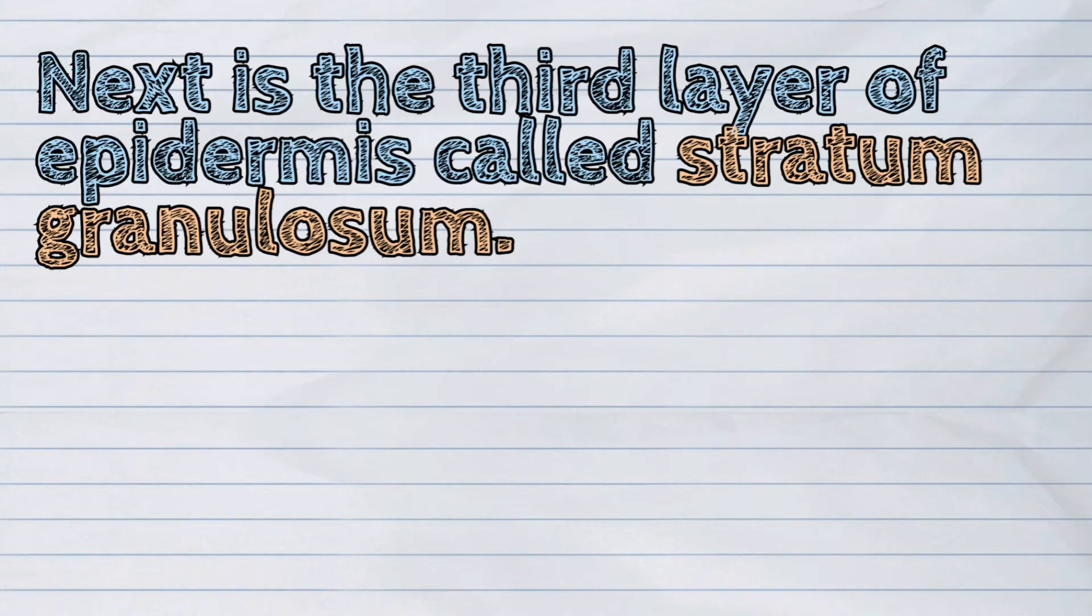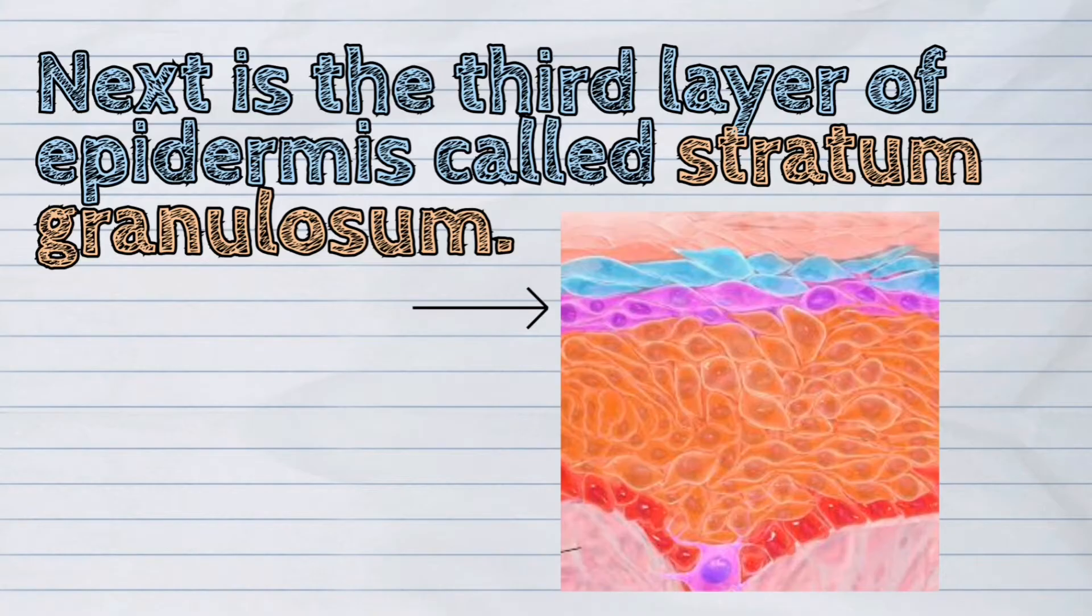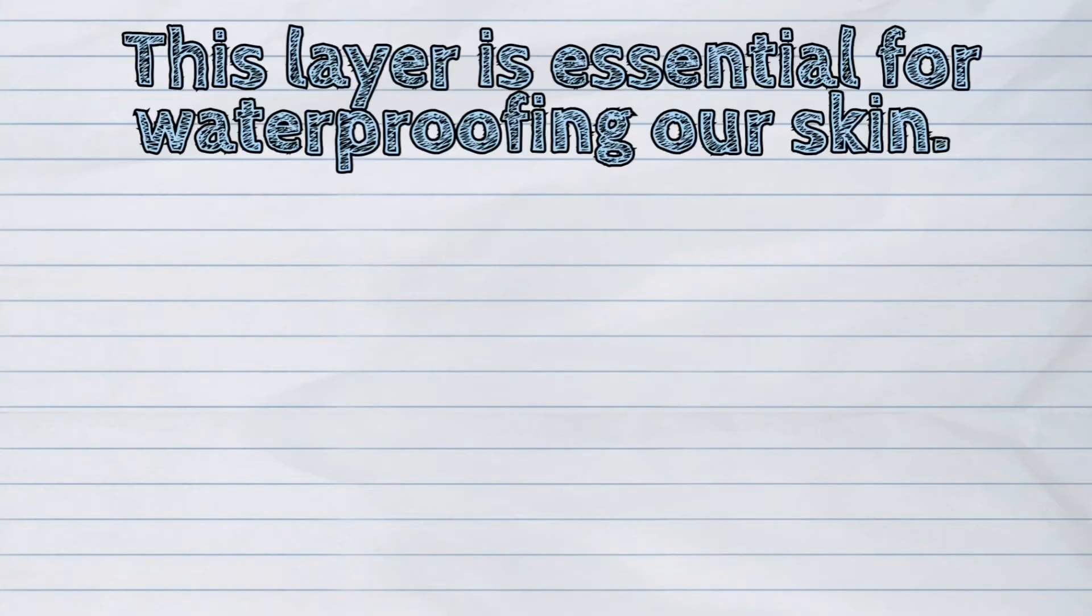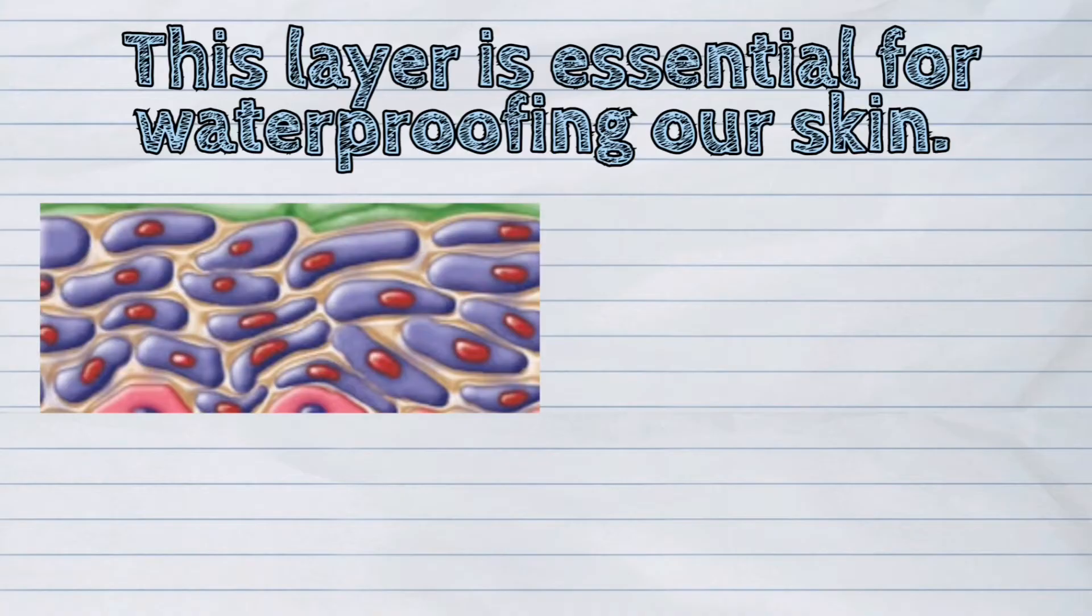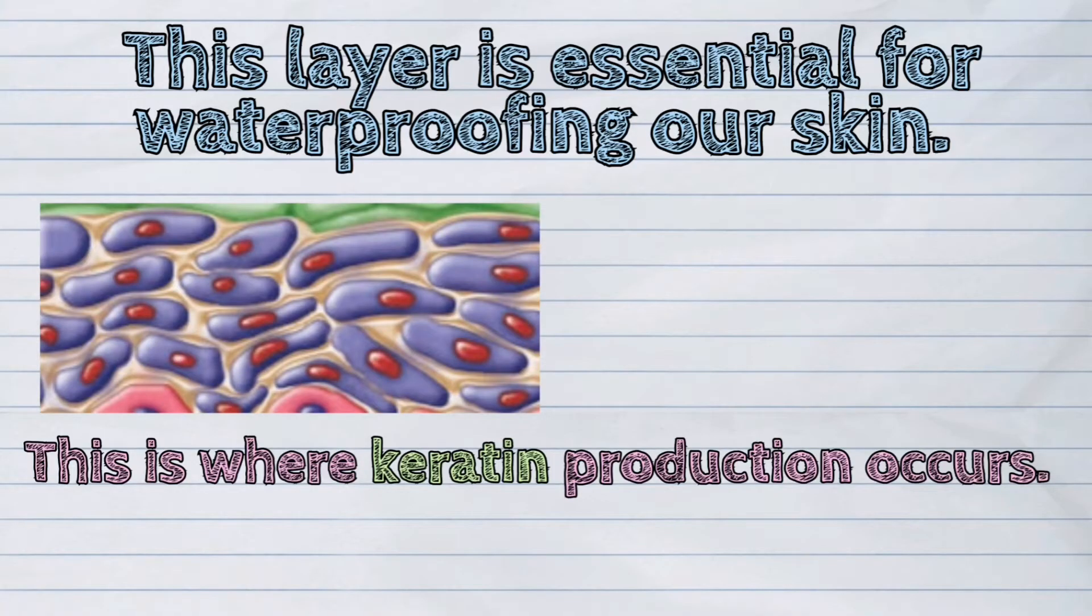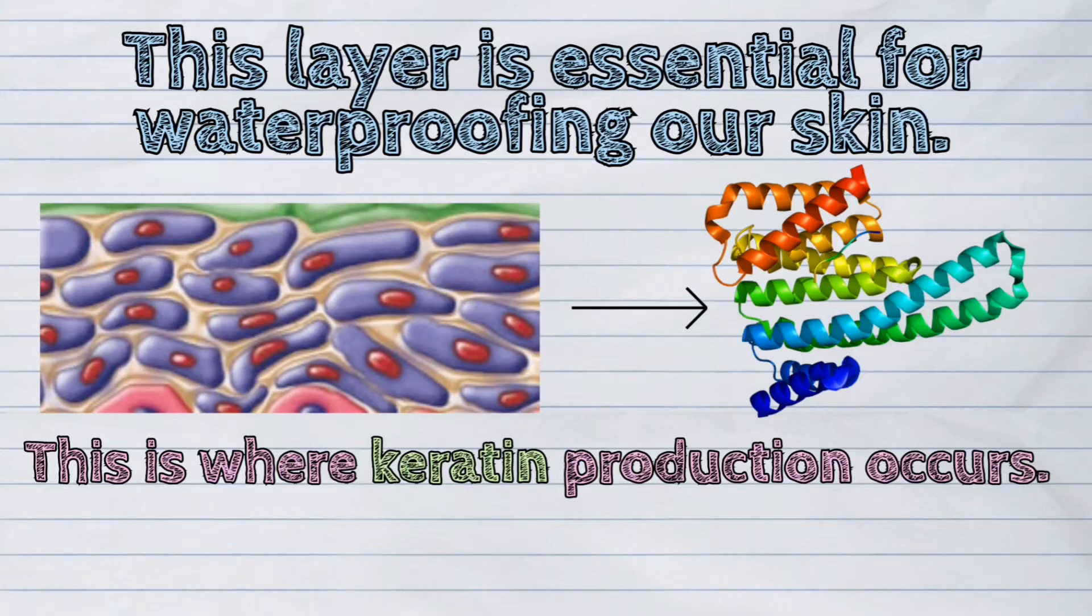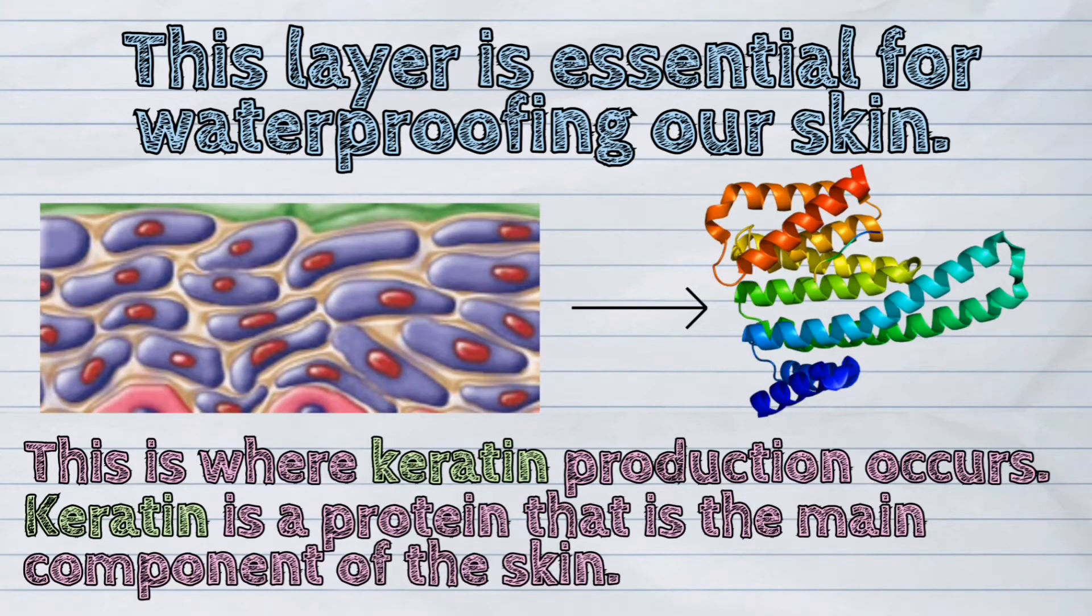Next is the third layer of epidermis called stratum granulosum. This layer is essential for waterproofing our skin. This is where keratin production occurs. Keratin is a protein that is the main component of skin.